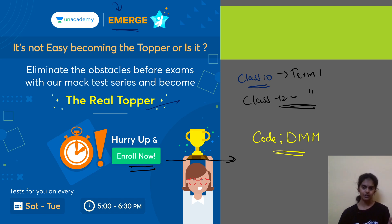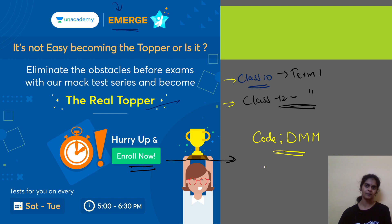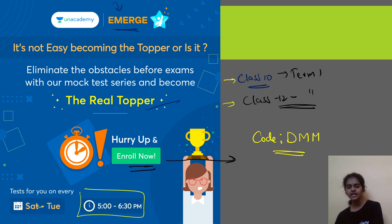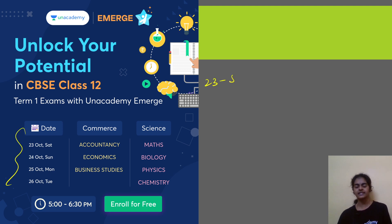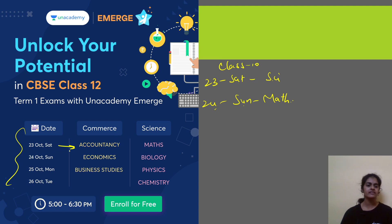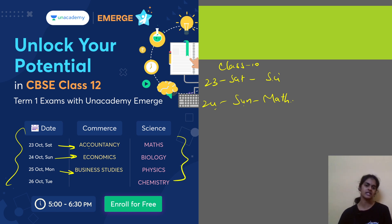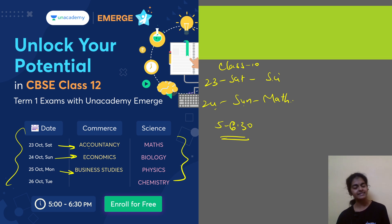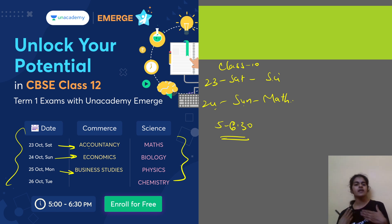Share it with all your seniors, juniors, and everyone around you in class 10 and 12 and let them enroll. The link is in the description box and the code is DMM. Timing is 5 to 6:30 PM Saturday and Sunday. On the 23rd Saturday you'll have a science test for class 10, 24th Sunday a math test. For commerce students: accountancy, economics, and business studies on the 25th Monday. The exam is one and a half hours, exactly like your sample paper — you'll get a detailed performance report and free video solutions from top educators.